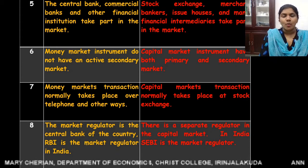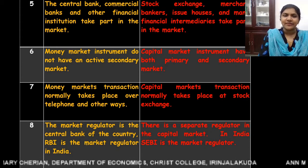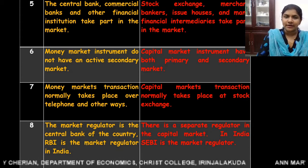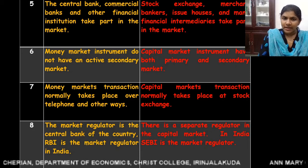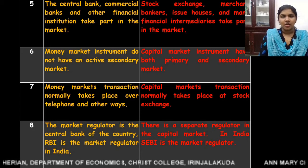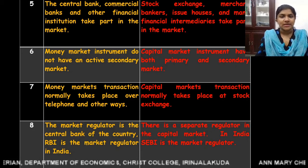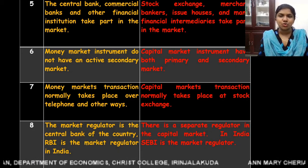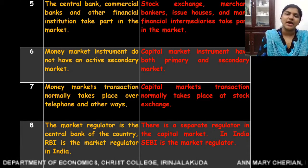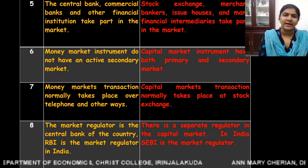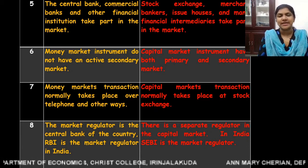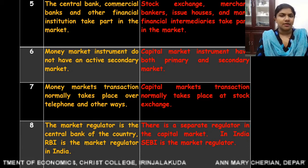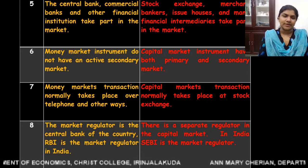The fifth difference concerns participants. The central bank, commercial banks, and other financial institutions take part in the money market, whereas stock exchanges, merchant banks, issue houses, and many other financial intermediaries take part in the capital market.